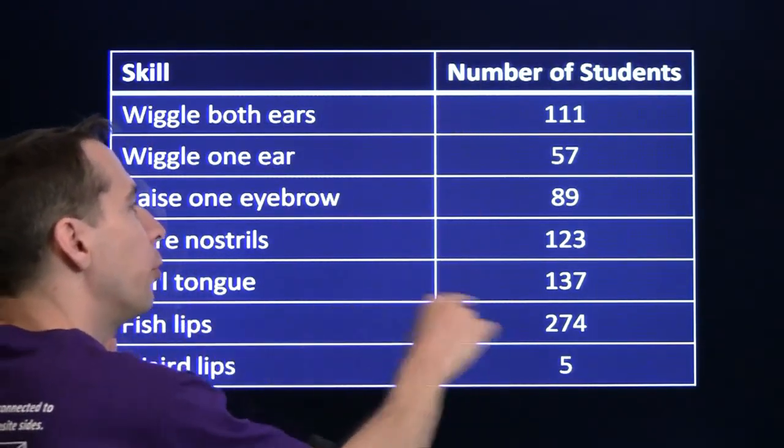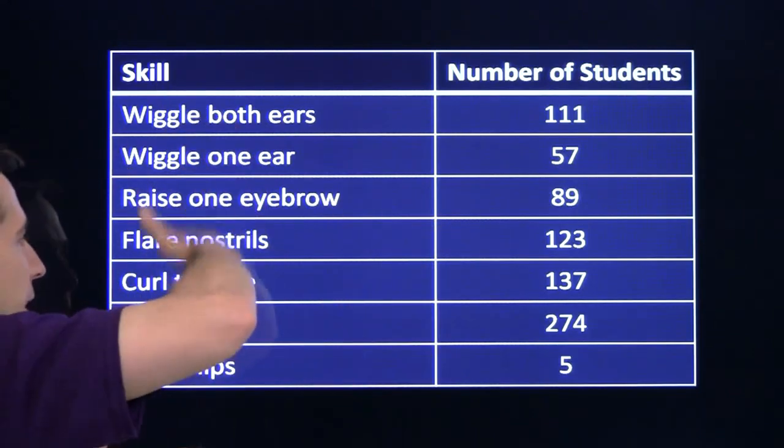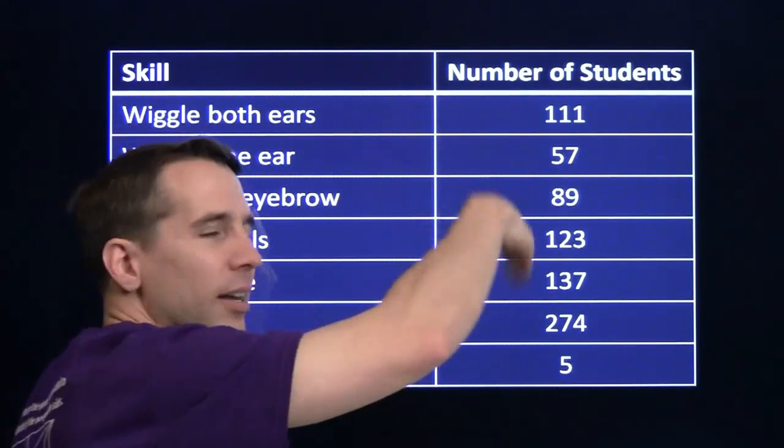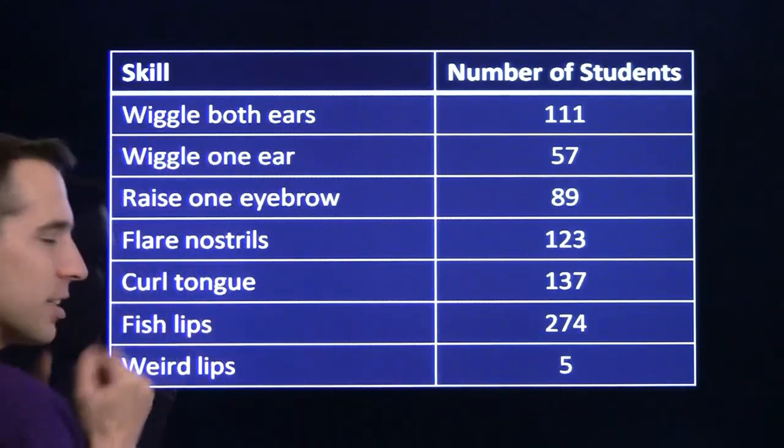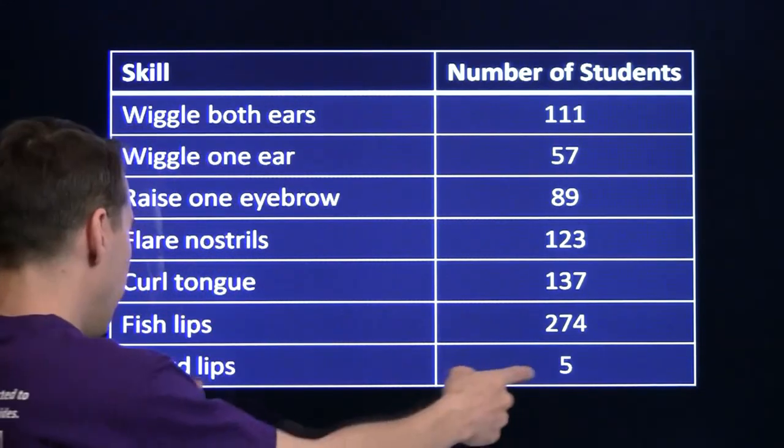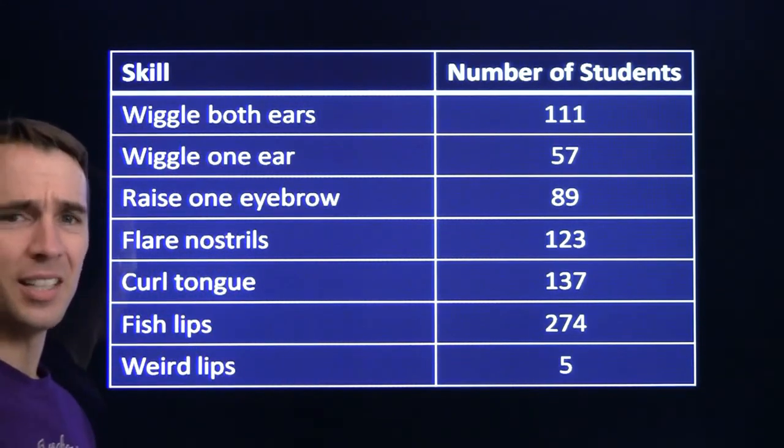You want to see something that looks a little bit more like this. This is a table. We have one row for each skill. You can pick out the skills really easily. You can pick out the numbers really easily. So I can look through here, 274 is the highest, fish lips is the most common. 5, that's the lowest, weird lips is the least common.